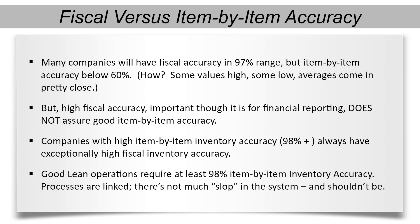Your minimum goal for item-by-item accuracy needs to be 98% or better. In the past, students of MRP were taught that 95% accuracy was the goal for MRP to work properly. In today's lean environment, however, that is not good enough.